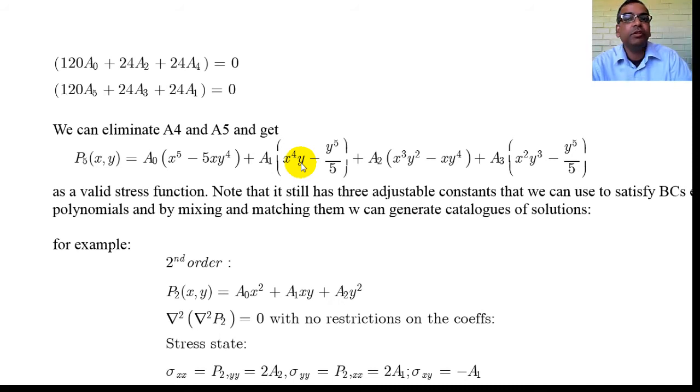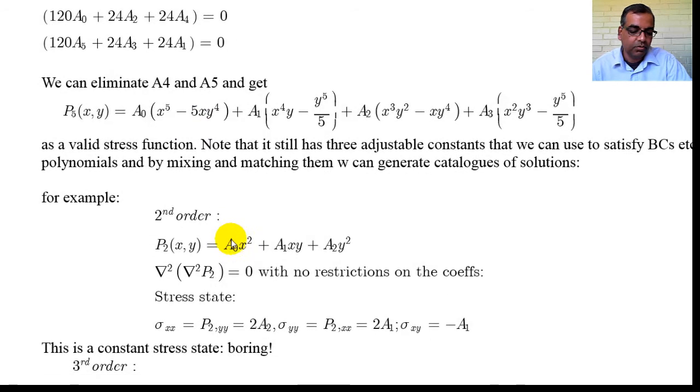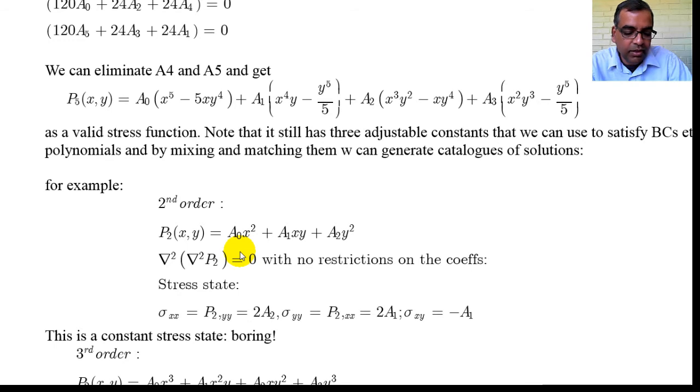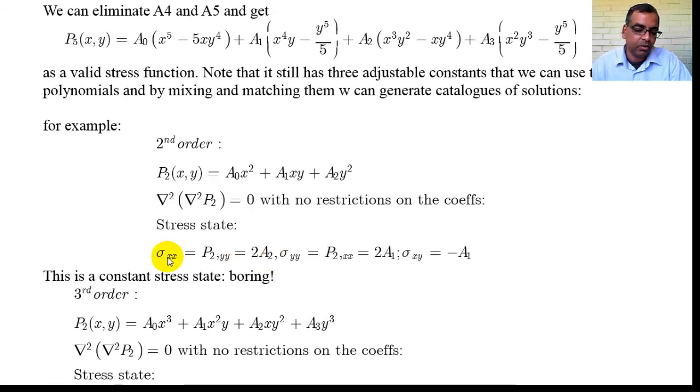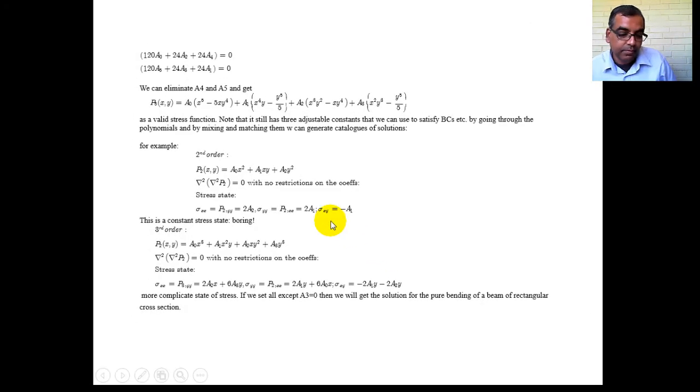And because of linearity, if you generate lots of these functions, you can mix and match. You can add, subtract, all types of things - it's beautiful. So for example, let us not start with fifth order, it is a pain in the neck. So let us start with second order. So P_2 is a_naught x^2 plus a_1 xy plus a_2 y^2. That's easy. If you do del squared of del squared of P_2, then no restrictions on the coefficients. The stress gives you - notice a_1, so there are three constants a_naught, a_1, a_2. So this should be sorry, this should be a_naught, that is not a_1, so let me write it down properly.